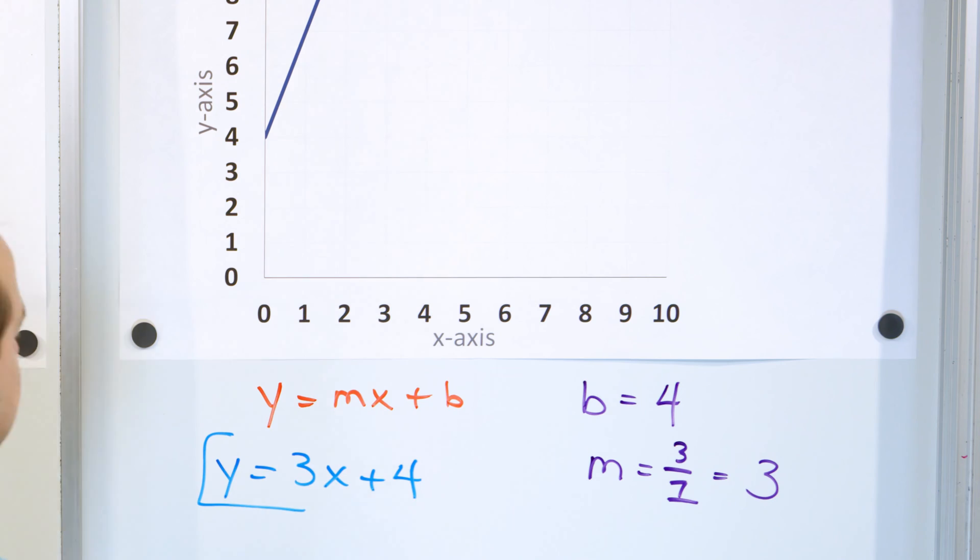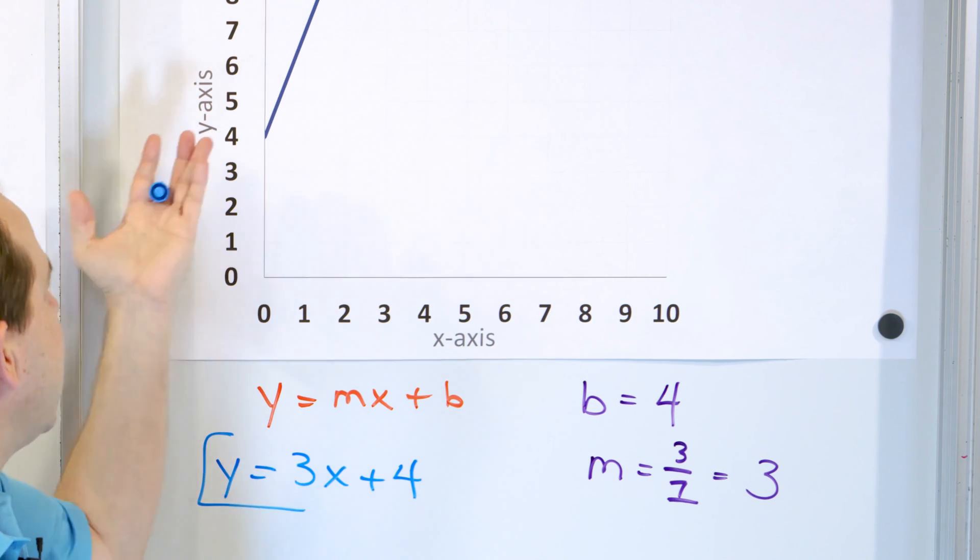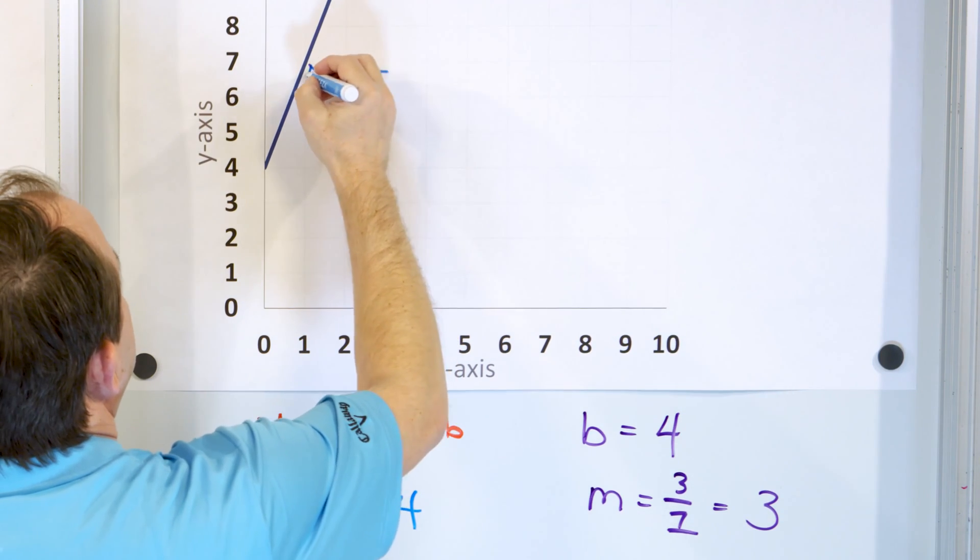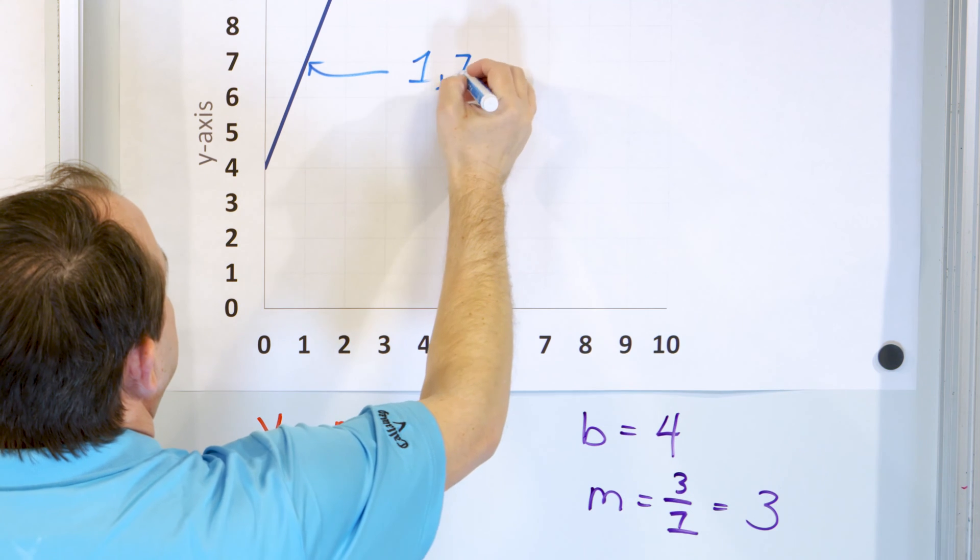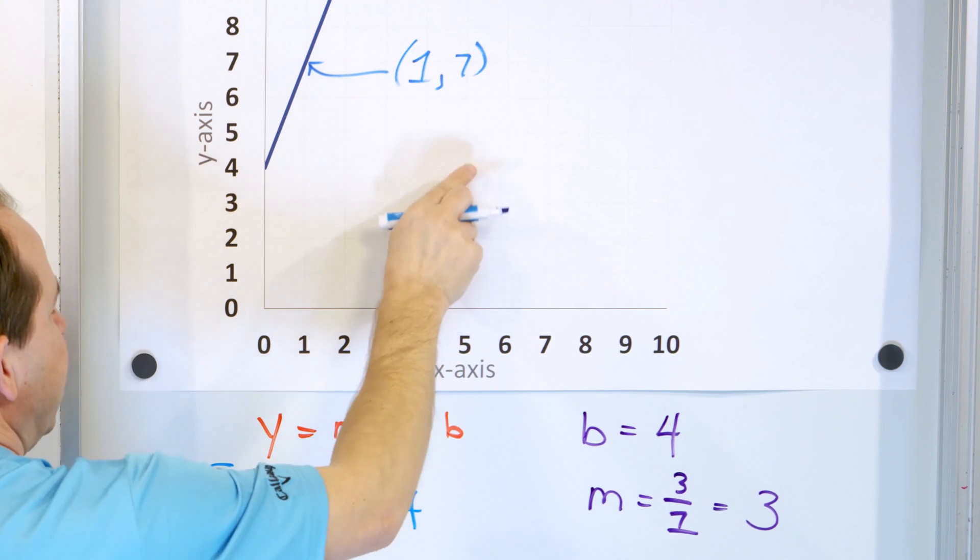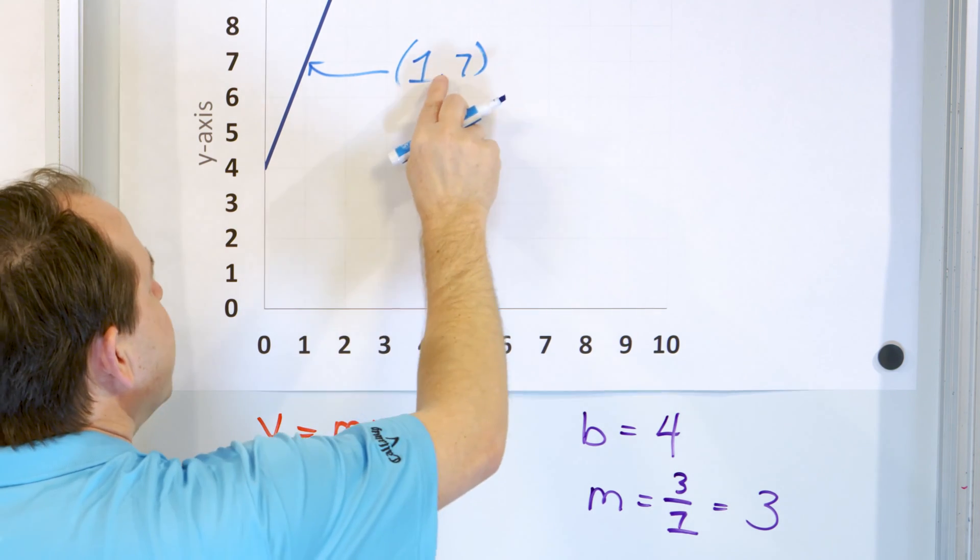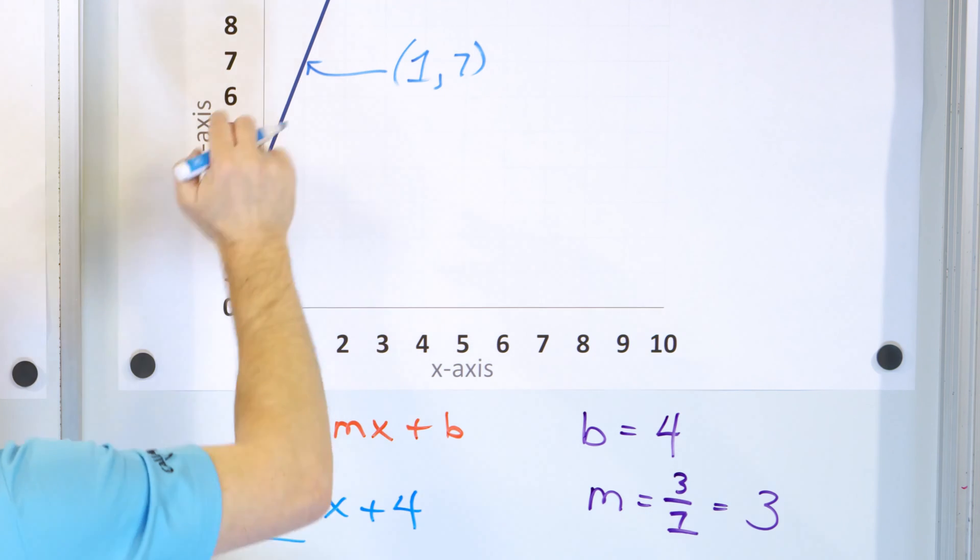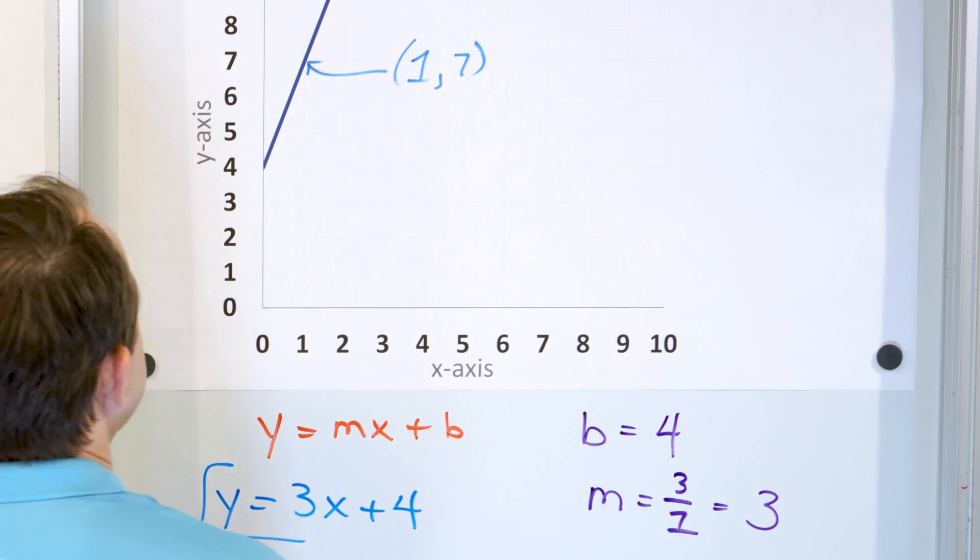You can always check yourself. Does this equation of a line really predict all of the points on this line? Well, let's just pick one. Let's pick this one right here. This point is 1 comma 7. Let's see if it's on the line. If we put x is equal to 1, you get 3 times 1 is 3, and then 3 plus 4 is 7. So 1 comma 7 is on the line. And if you pick any other point on this line, you will find that when you plug it into this equation, it does satisfy it. So we know that this is the correct equation of this line.